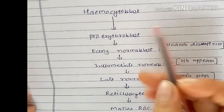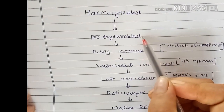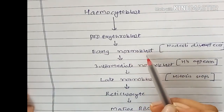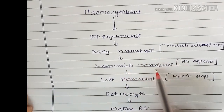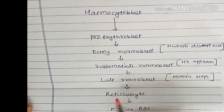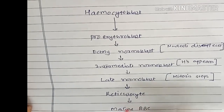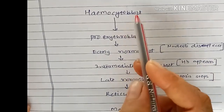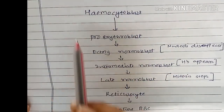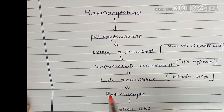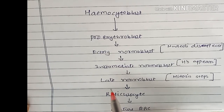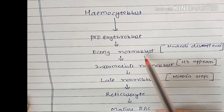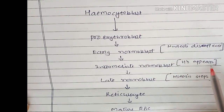Stages of erythropoiesis: there is formation of proerythroblast from hemocytoblast, which forms early normoblast, then intermediate normoblast, then late normoblast, then reticulocyte, and finally a mature red blood cell. As the stage advances, there is reduction in the size of the cell, and nucleoli disappear in the phase of early normoblast.